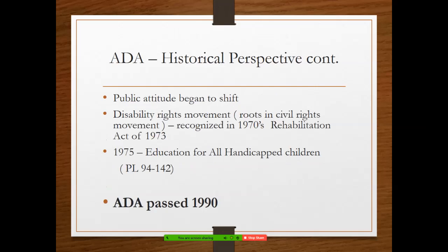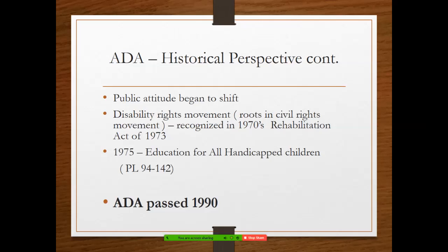At that time, public attitude began to shift. The disability rights movement happened, and people became more aware of people with disabilities and the value and contribution to society they played. There came a Rehabilitation Act in 1973, and then in 1975 the Education for All Handicapped Children Act. Believe it or not, up until that point, kids who were severely handicapped did not necessarily have to be educated by public school systems. That was PL 94-142, since replaced by the IDEA.